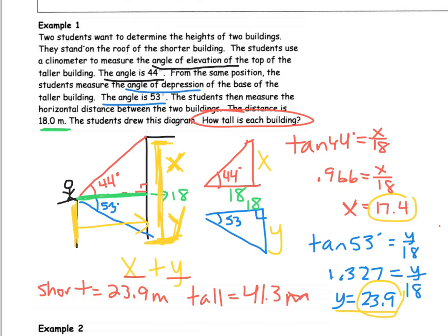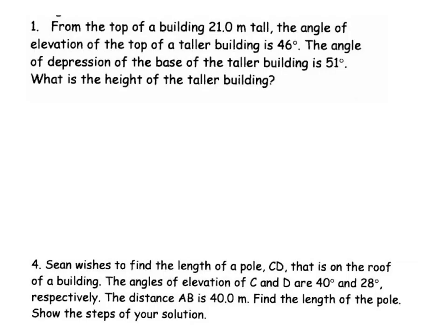I'm going to skip the next problem and go to the back. From the top of a building 21 meters tall, the angle of elevation of the top of the taller building is 56. And the angle of depression of the base of the taller building is 51. What is the height of the taller building?